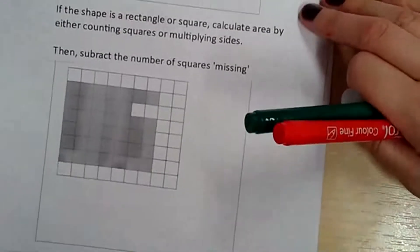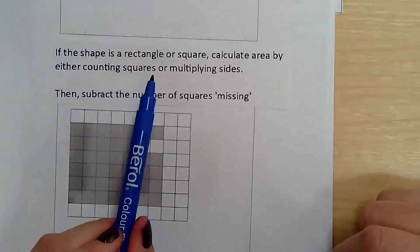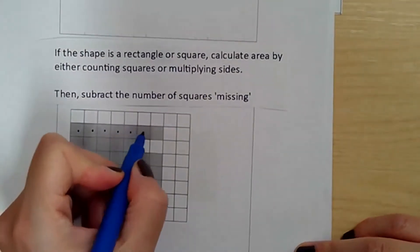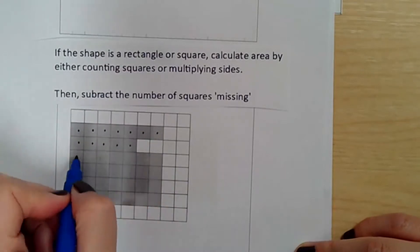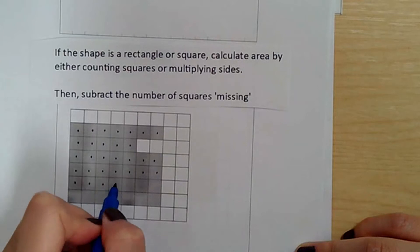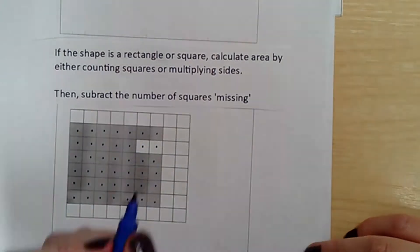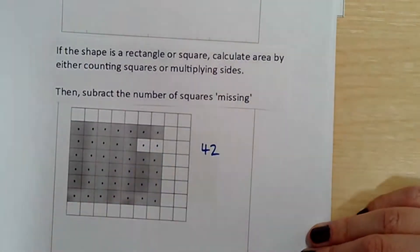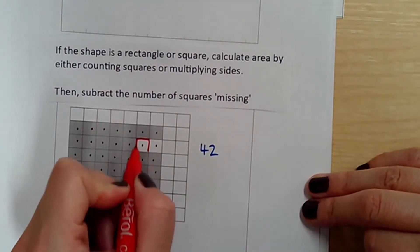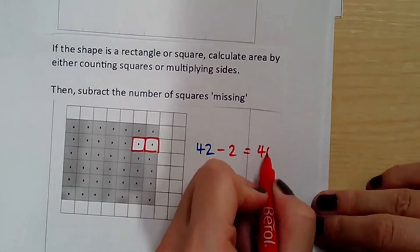Here's our steps to success: if the shape looks like a rectangle or square, calculate the area by counting squares or multiplying sides. Counting the squares: 1 through 42 — we have 42 squares in total. I must also count the two that are missing. We take away the number of missing squares: 42 take away 2 equals 40 squares.